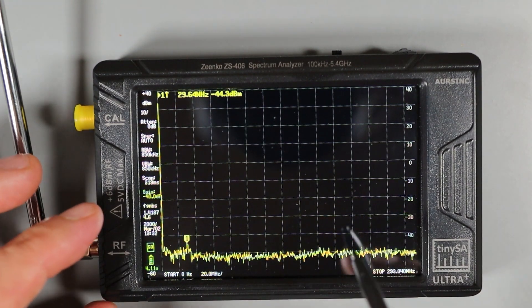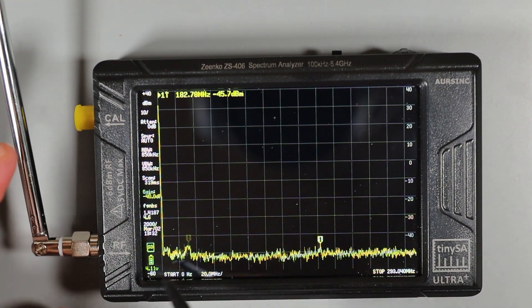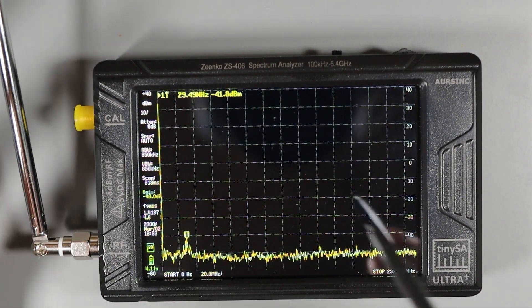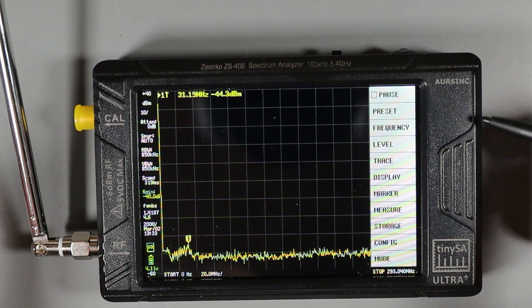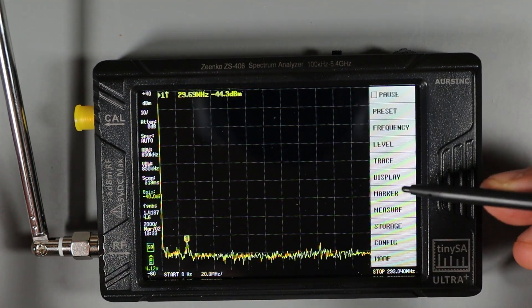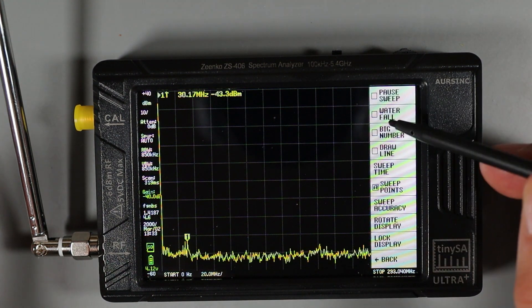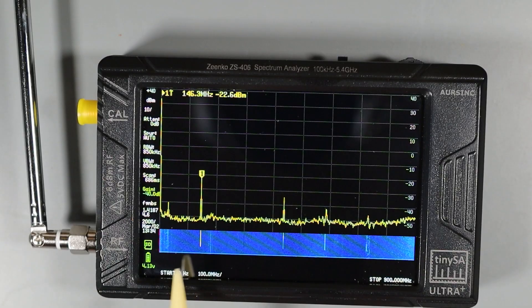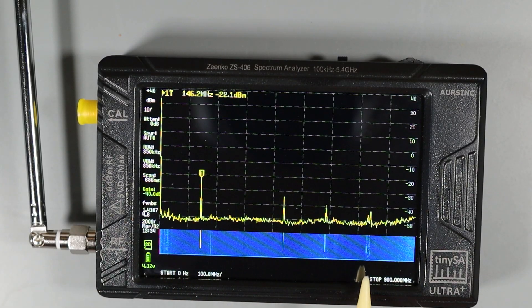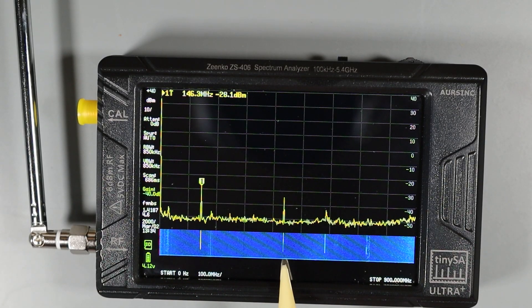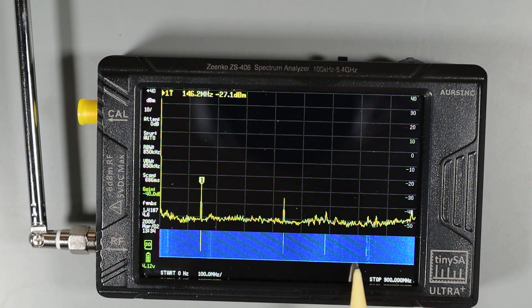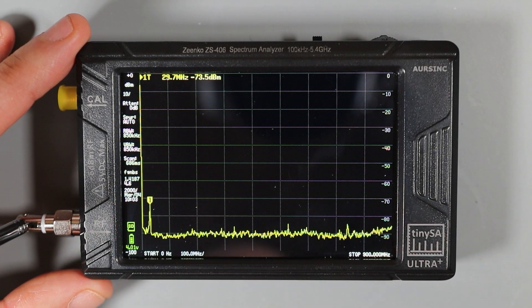Another feature of the TinySA that you might want to enable is the waterfall display. Now by default that's off, but you can turn it on by going to the main menu level and choosing display and then turning on the waterfall. Now you can see that as the measurement cycles progress over time, we can see any measured signals appear in the waterfall display.